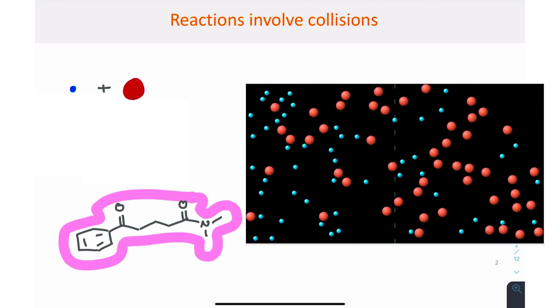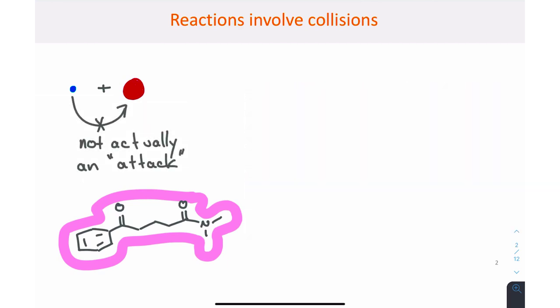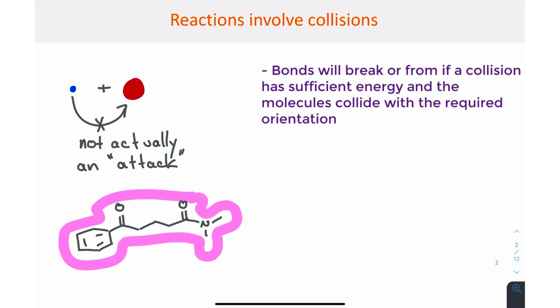The language we use about reactions can also be misleading. For example, we often say that a nucleophile attacks an electrophile, when in fact the two are simply colliding. There's no intent involved. A bond is going to break or form if the collision has sufficient energy and the molecules have the appropriate orientation.